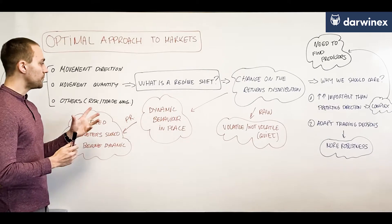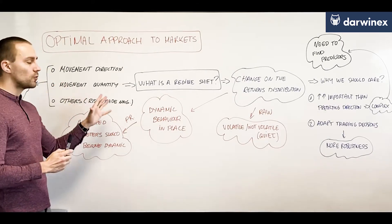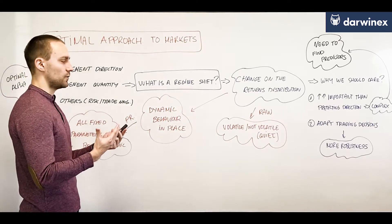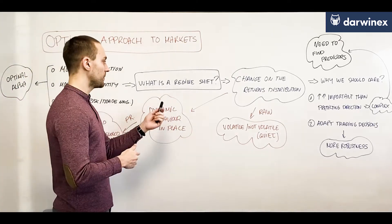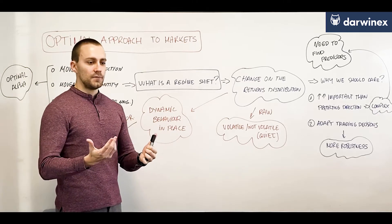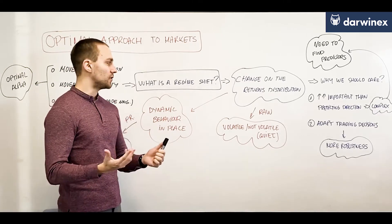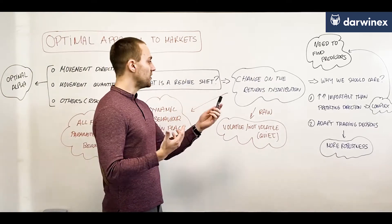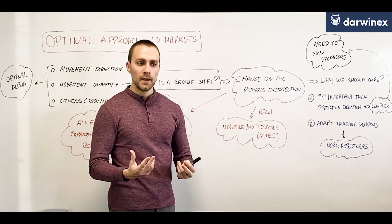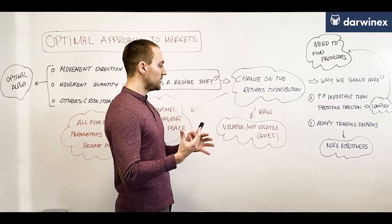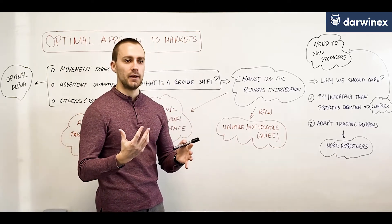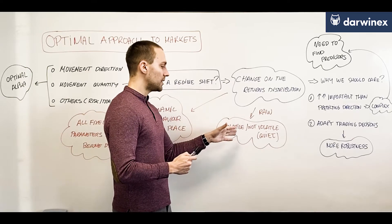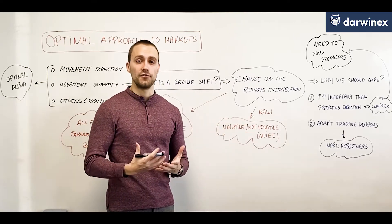Principally we will be focusing on movement quantity here, and the first definition that comes to mind is: what is really a regime shift? A regime shift is a change in the returns distribution, and we can analyze it in its most raw format — thinking about volatile and not volatile, or quiet, regimes.